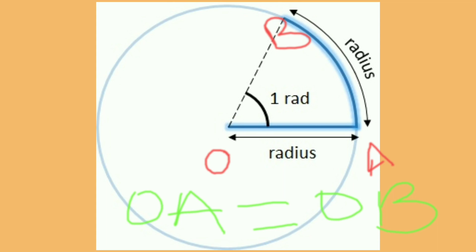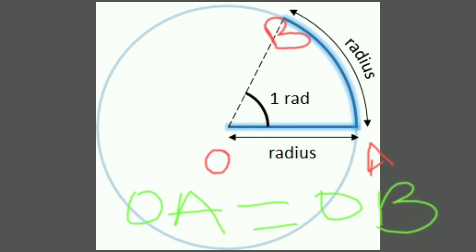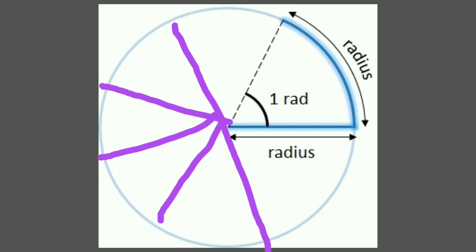Now the arc AB subtends an angle at the center. What we call it as one radian.